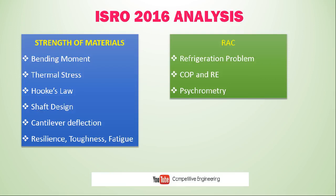From Strength of Materials, there was a question on bending moment and a numerical on thermal stress. Hooke's Law — static deflection when a force is applied — was covered. A shaft design question based on torsional rigidity was included. A theory question on cantilever deflection was also there. A match-the-following question covered resilience, toughness, and fatigue — distinguishing between these properties.